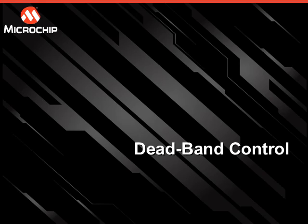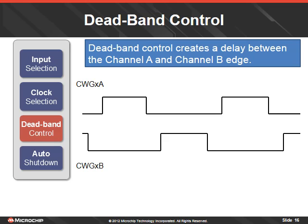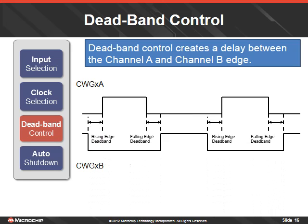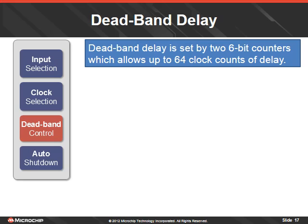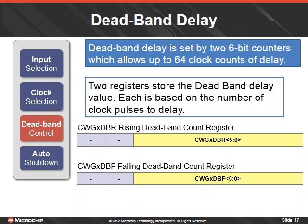Deadband control creates a delay between the channel A and channel B edges. There are separate settings for the rising edge delay and the falling edge delay. Deadband delay is set by two 6-bit counters, which allow up to 64 clock counts of delay. Two registers store the deadband delay value. The rising deadband count register controls the delay from the rising edge of the input signal, and the falling deadband count register controls the falling edge delay. Each is based on the number of clock pulses to delay.